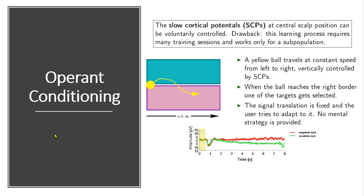However, this process requires a quite lengthy training period — it's like learning a new skill. It may take three to six months, but eventually you will be able to control your brain to generate specific patterns that can be picked up by an electrode.